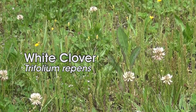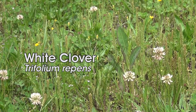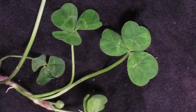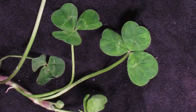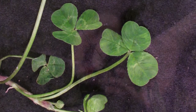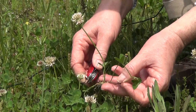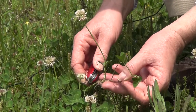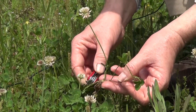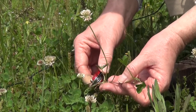Trifolium of course means three leaves or three leaflets, so you have a typical leaf here with the shamrock type leaf. When we look at the plant of the white clover, we see that the stem is actually a creeping stem.